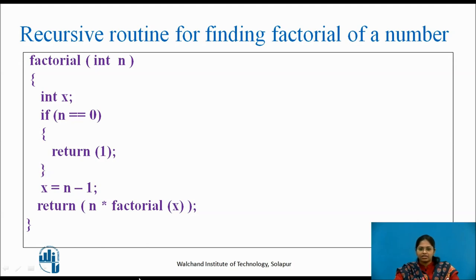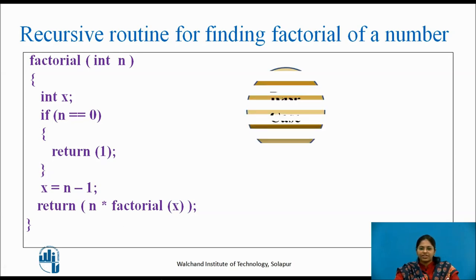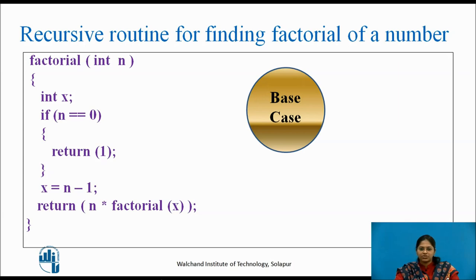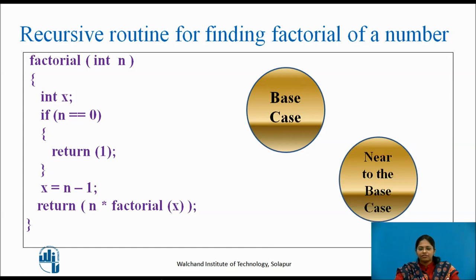For writing any recursive routine, there are two conditions that must be satisfied. The first is the base case — the smallest value which is executed without recursion, and which is the decision criterion for stopping the recursive procedure. The second is the general method, which makes any particular case reach nearer to the base case. In this factorial function, each time the function calls itself, its argument is decremented by 1, so that the argument becomes smaller and ultimately reaches the value 0, which is the base case.